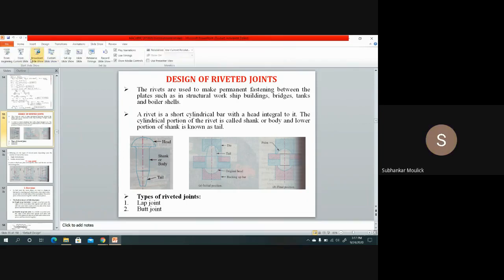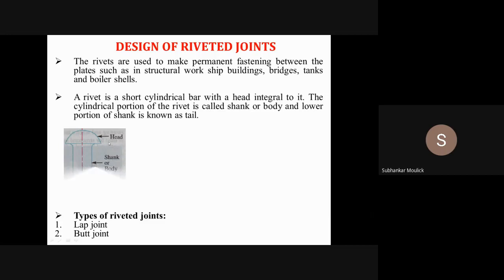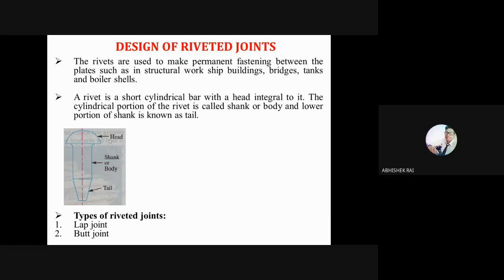First of all, tell me what is a rivet. Tell me whether a rivet is a permanent joint or a temporary joint. A rivet is a permanent joint. Now explain your answer — why is it a permanent joint and why is it not a temporary joint?